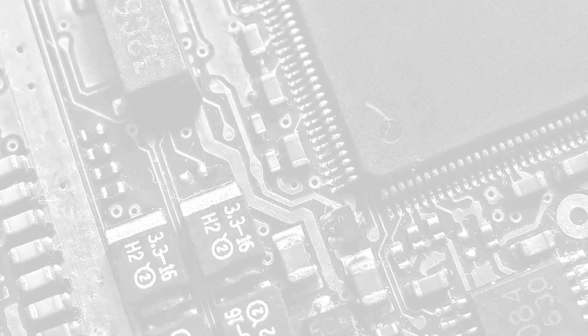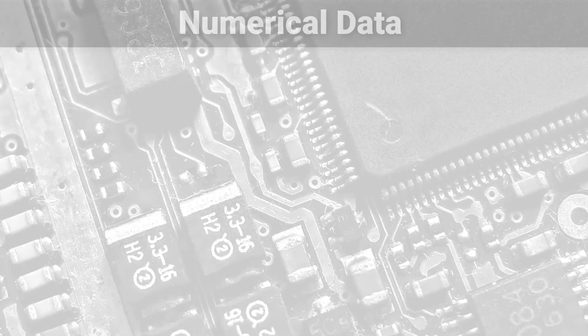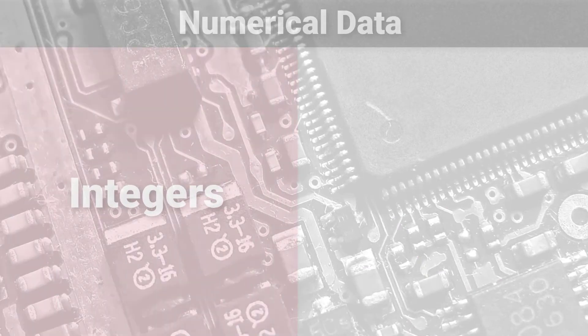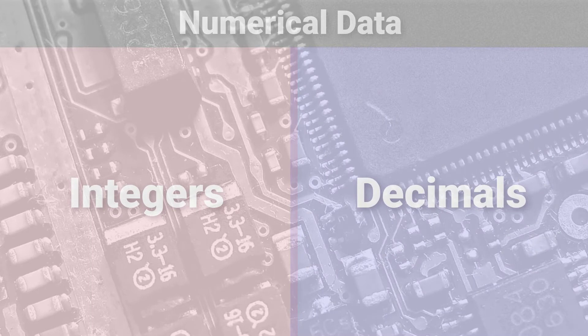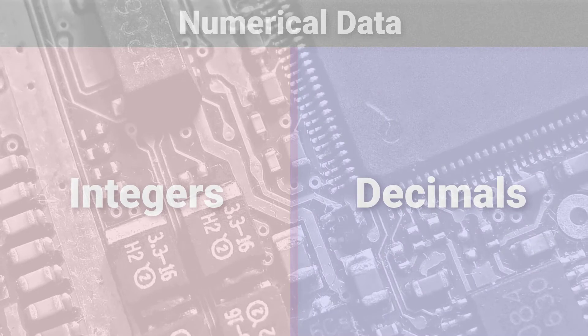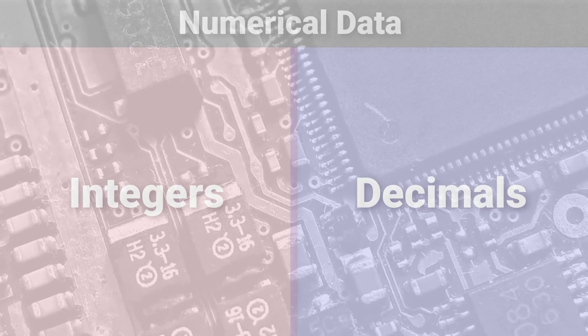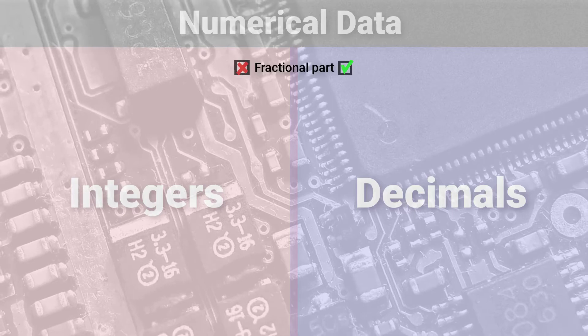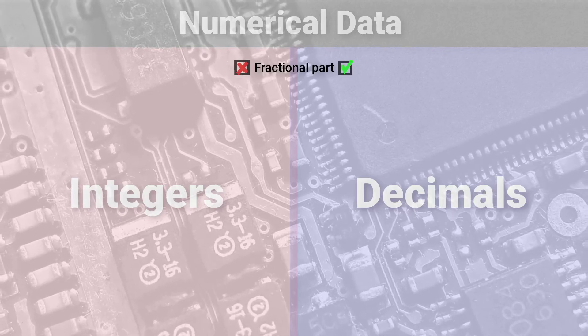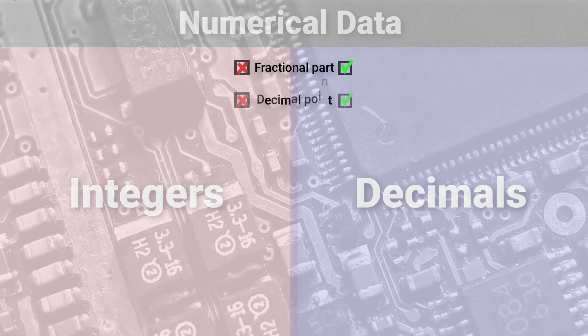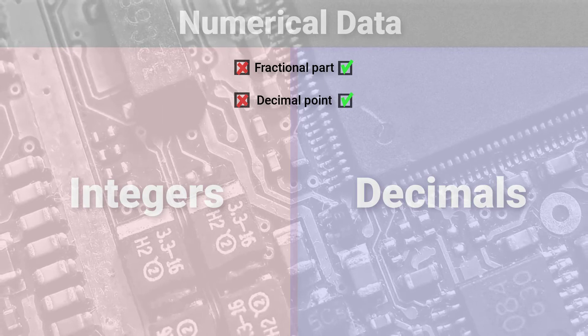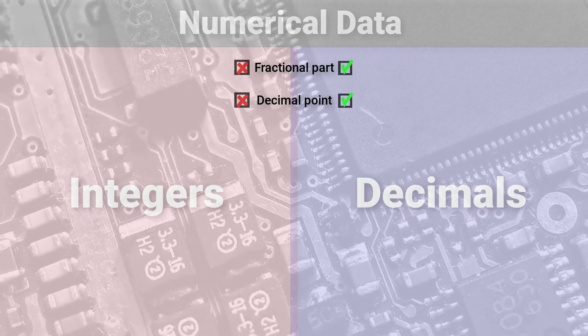There are two general types of numerical data inside computer programs. We have integers and we have decimals. And let's just go ahead and be honest, this is probably something you've been exposed to in some shape or form already, but hang with me. Integers are numbers that don't have fractional parts, while decimals are numbers that have fractional parts. Decimal numbers have a decimal point that separates the whole part from the fractional part.